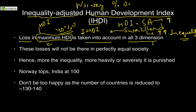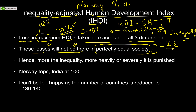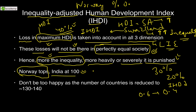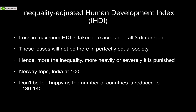IHDI measures the loss in maximum possible HDI — denoted by HDI itself — due to inequality across all three dimensions: life expectancy, income, and education. These losses would not exist in a perfectly equal society, as seen in Norway where there is hardly any loss. In African countries, the heavy inequality is severely punished — you may see a 20-30% reduction, so an HDI of 0.6 could appear as 0.4 in IHDI. Norway again tops the IHDI rankings. India ranks around 100 in IHDI but this doesn't mean a genuine jump from 135, as the number of ranked countries differs. India's HDI rank has generally stayed in the 130s, but shows steady improvement.